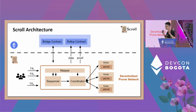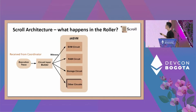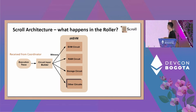The magic actually happens on the roller side, where you run ZKEVM and generate proof for the validity of all transactions inside a block. After receiving the execution trace from the coordinator for a certain block, the roller runs ZKEVM. ZKEVM is composed of several circuits — each circuit verifies certain functionality for certain parts. For example, the EVM circuit verifies that your EVM state machine moves correctly, from push to pop and to the next opcode being executed.